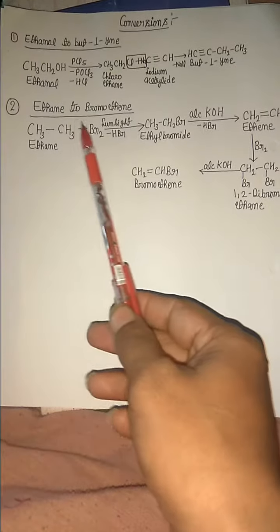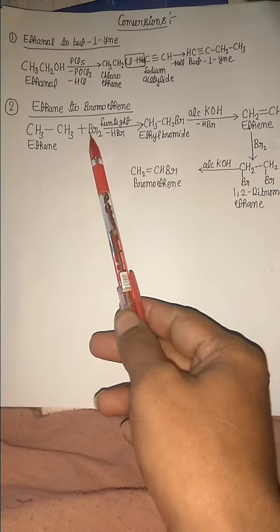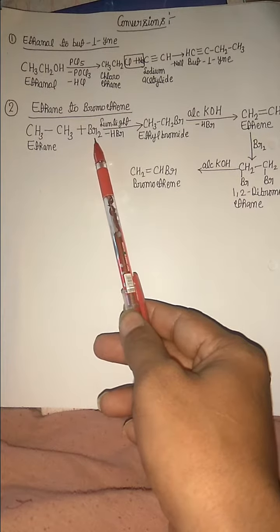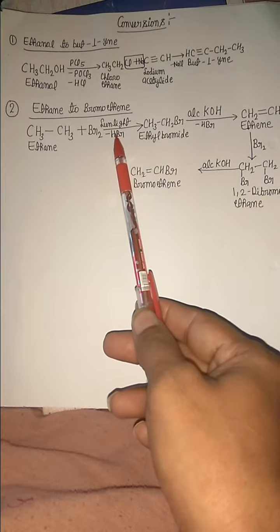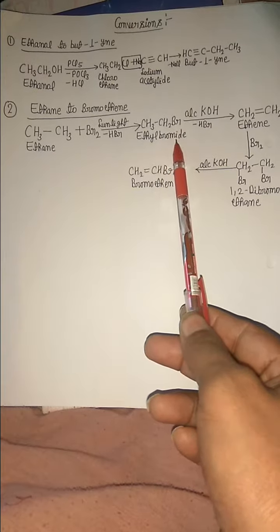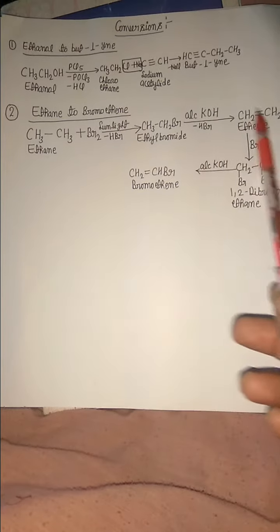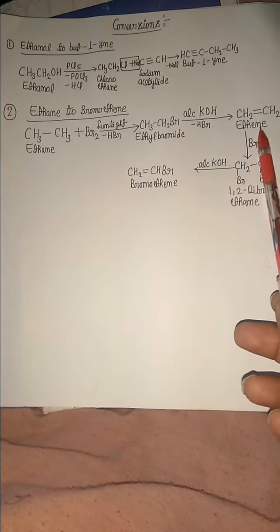Again, look here: ethane reacts with bromine in the presence of sunlight and loses one hydrogen bromide molecule to form ethyl bromide. Ethyl bromide reacts with alcoholic KOH and loses one hydrogen bromide molecule to form ethene.